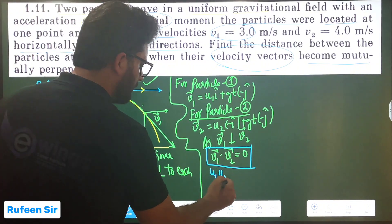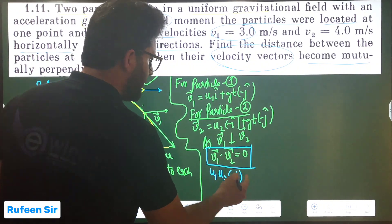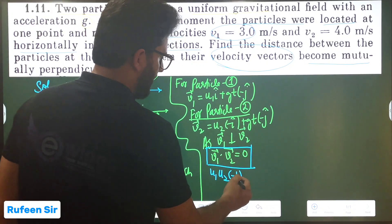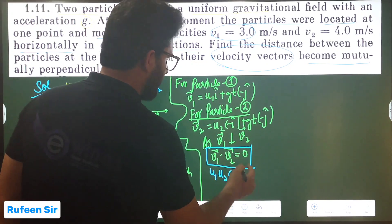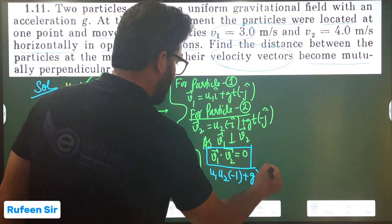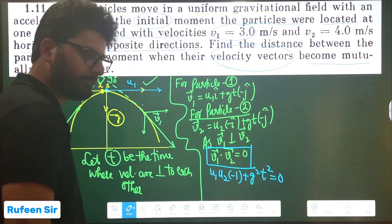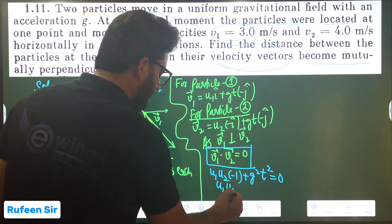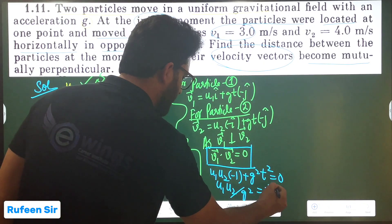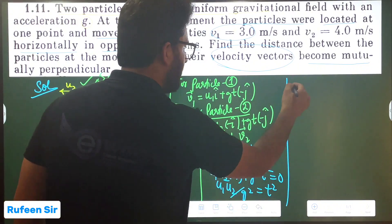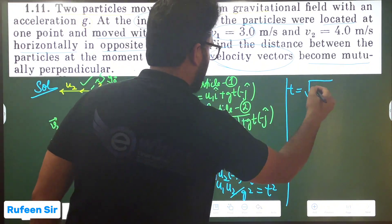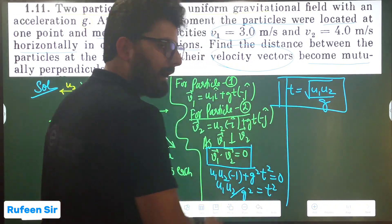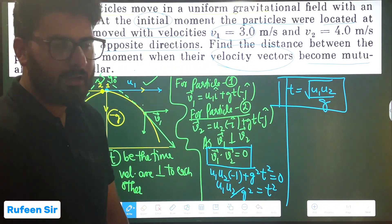From the dot product: −U1·U2 + g²T² = 0, which gives g²T² = U1·U2, so T² = U1·U2 / g², therefore T = √(U1·U2) / g. This is the time at which both particles' velocities are perpendicular to each other. Now I need to find the distance — the relative separation between both particles after this time.